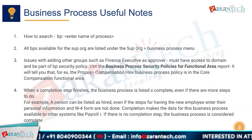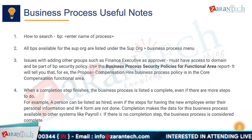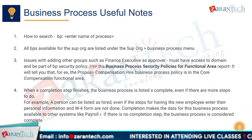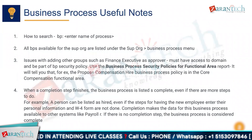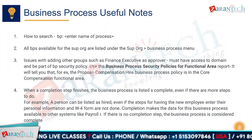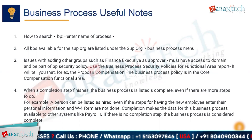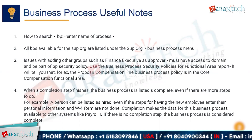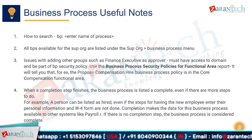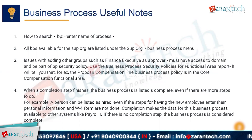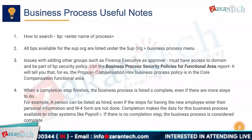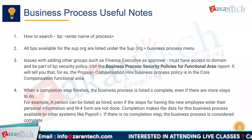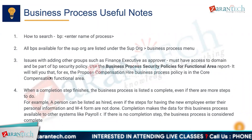A useful tip: when searching, typing 'bp' before the process name restricts the search specifically to business processes — rather than pulling all results containing that keyword. All business processes available for supervisory organizations are listed under the Supervisory Organization Business Process menu. If you want to add a role such as Finance Executive as an approver, that role must have access to the domain and be part of the BP security policy.